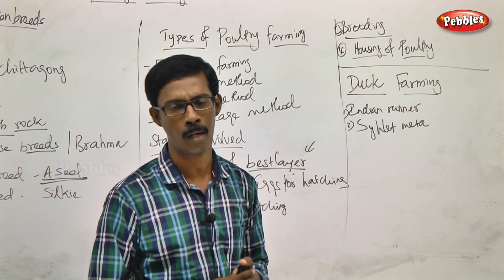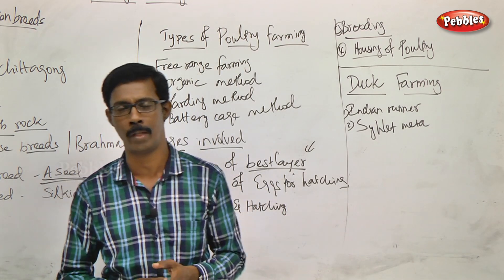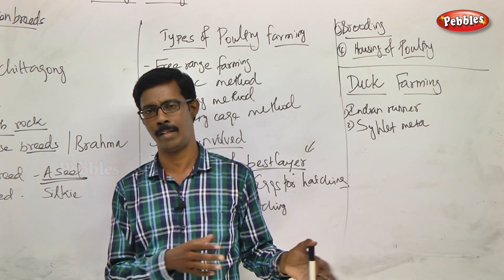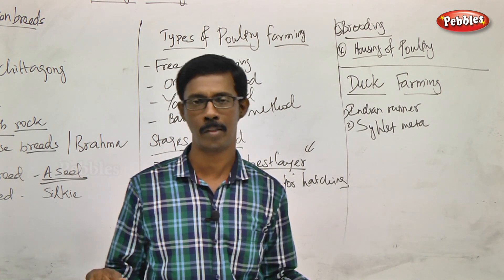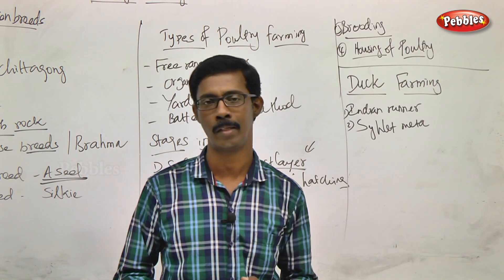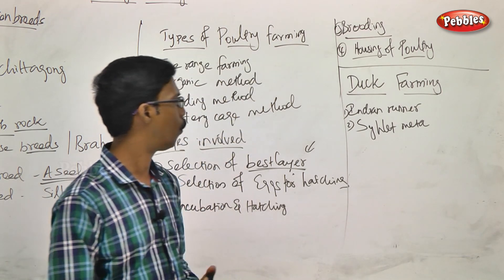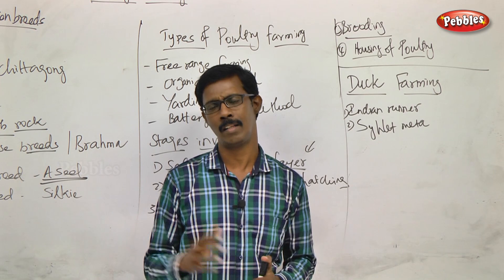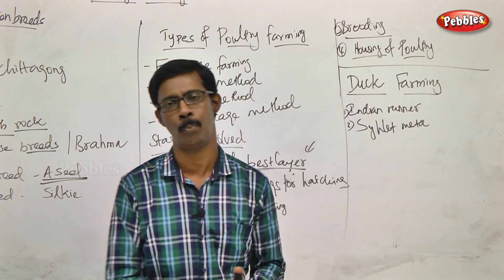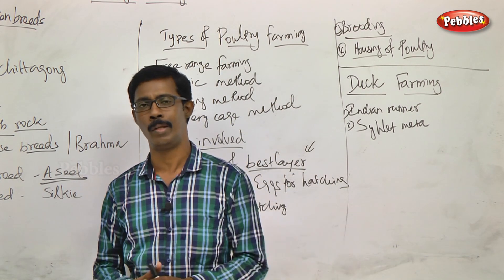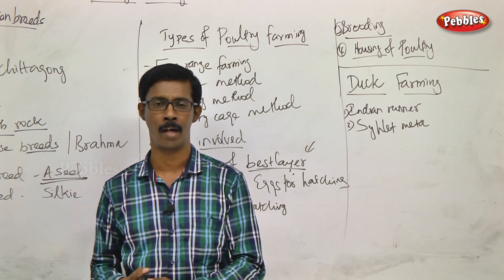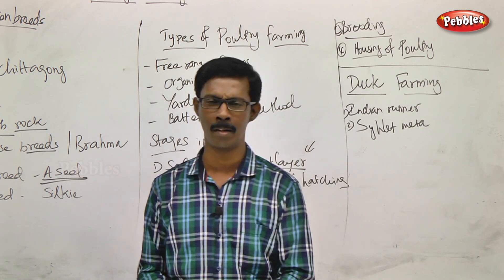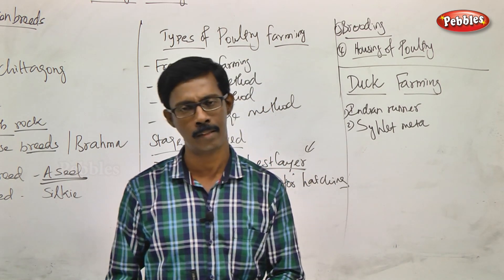After hatching, the next stage is brooding, which means selecting and raising the breed. Then we look at housing of poultry — providing a proper environment including space, temperature, water management, and waste removal. The advantages of the poultry industry include primary products such as meat, eggs, feathers, and manure used as fertilizer.